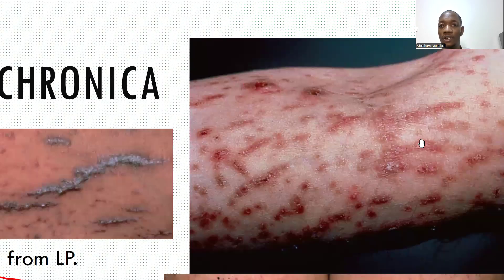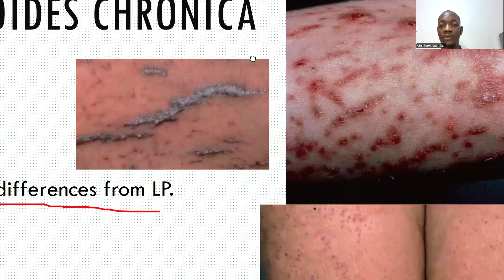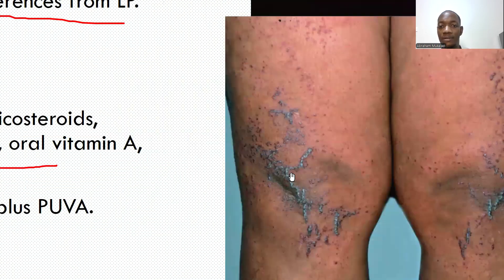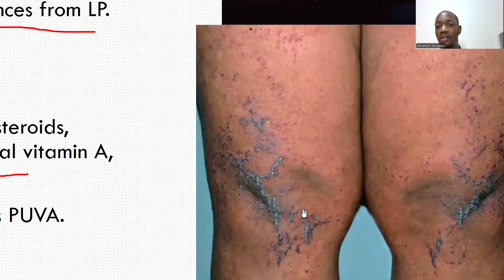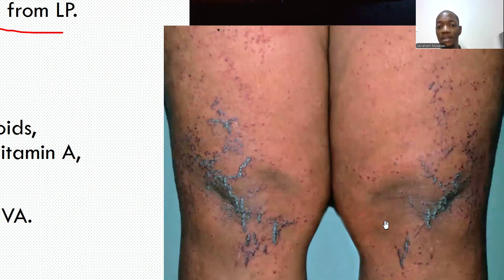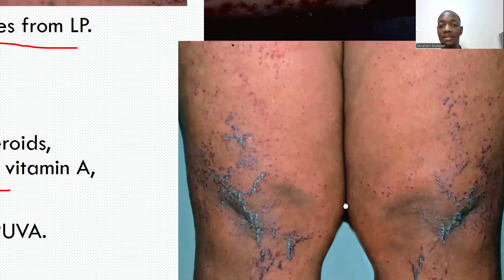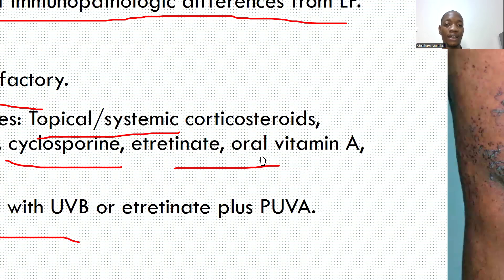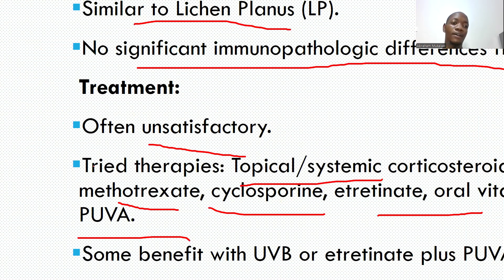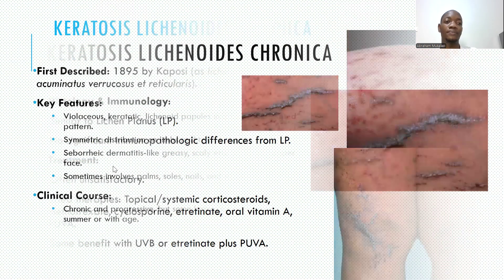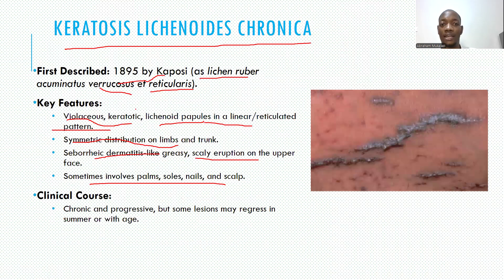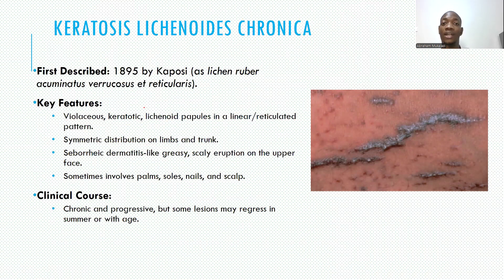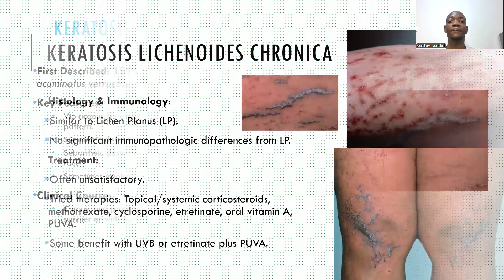You can see the reticular, net-like pattern on the skin, and the verrucous appearance. There are lichenoid papules and the plaques can be verrucous — that is why one scientist was calling it lichen ruber acuminatus verrucosus et reticularis. But now we just call it keratosis lichenoides chronica.